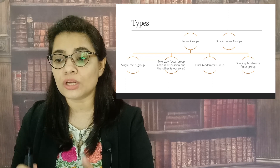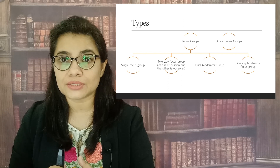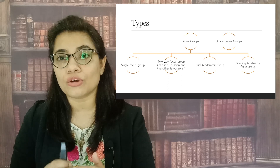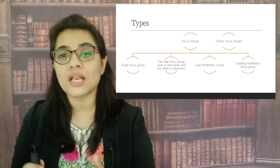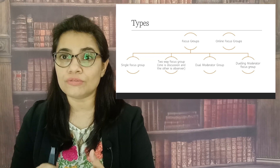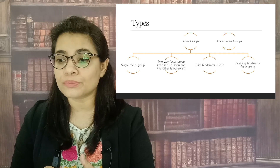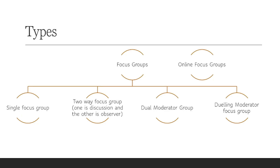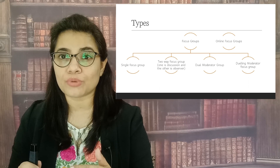The third type is called the dual moderator focus group, which involves two moderators. The roles of the two moderators can be divided — for example, one may take field notes or observe the non-verbal gestures of the participants, while the other facilitates the focus group by asking questions and involving in the discussion. The fourth type is the dueling moderator focus group, which is a very interesting type. In this type, there are also two moderators — one takes a positive stance on the topic and the other takes the opposite or negative position. Both facilitate the discussion together and ask participants to share their point of view accordingly.